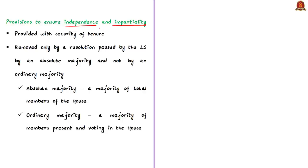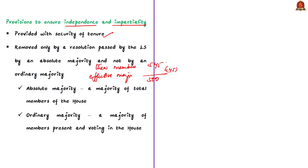To ensure the independence and impartiality of the speaker, the Constitution provides certain safeguards. First, the speaker is provided with security of tenure and can be removed from office only on a resolution passed in Lok Sabha by a majority of all the then members of the house — this is called effective majority. For example, if there are 545 seats but 45 are vacant, the then members are 500, and to remove the speaker at least 251 people must vote in favour of the resolution.